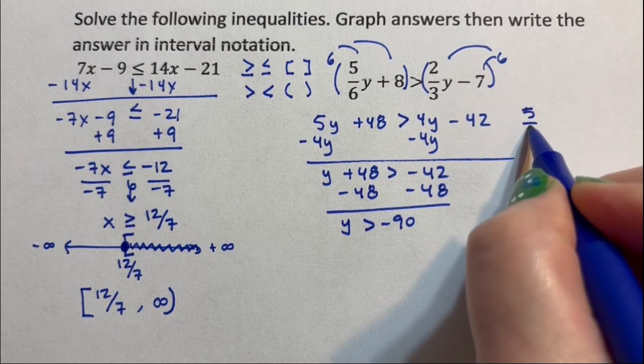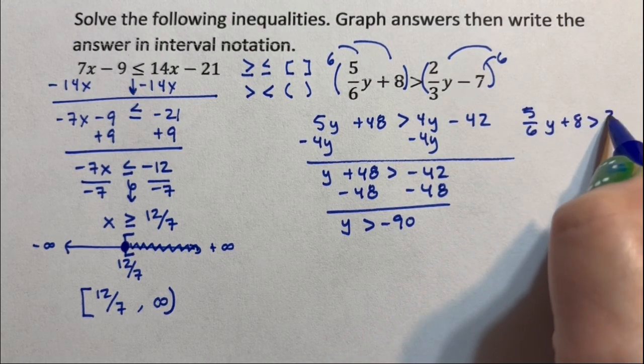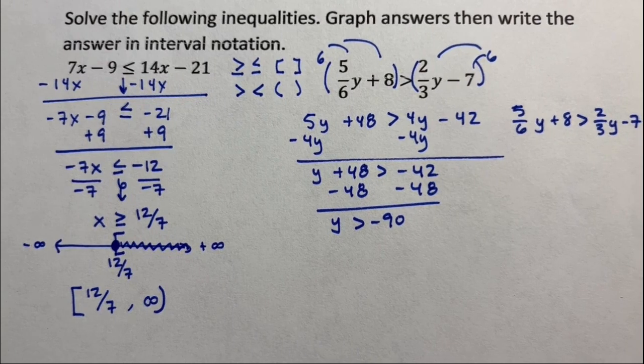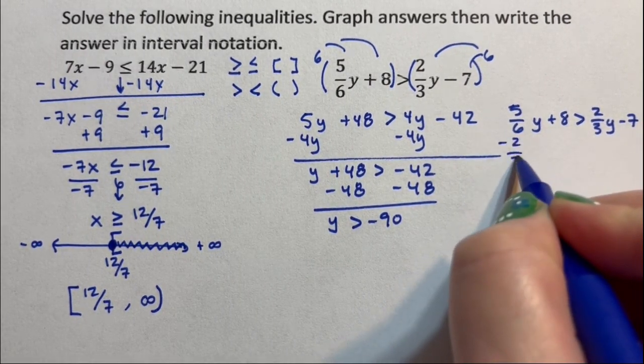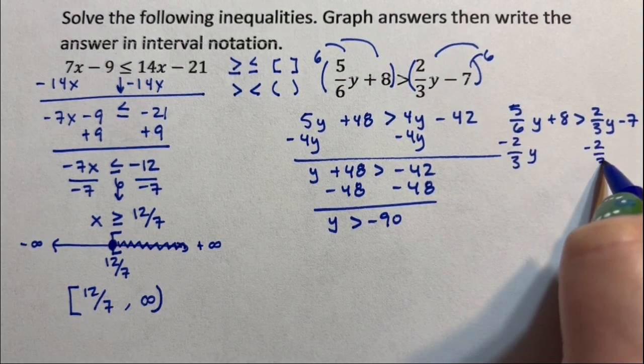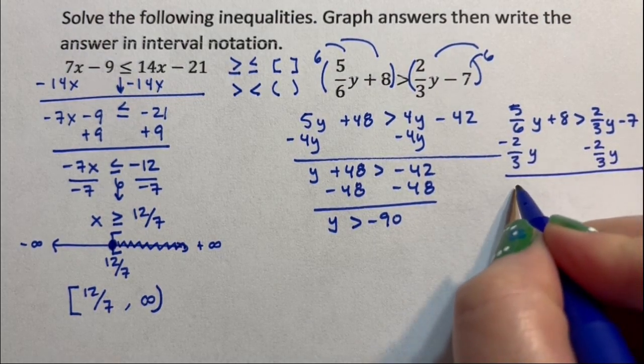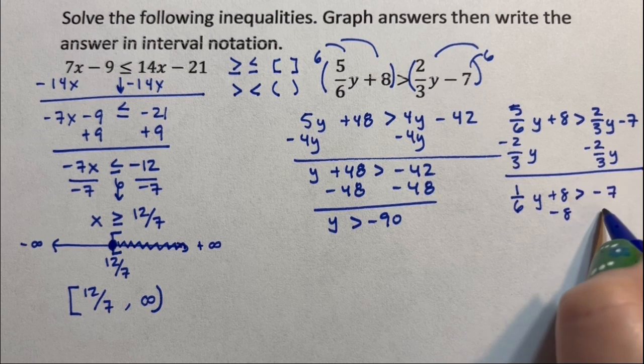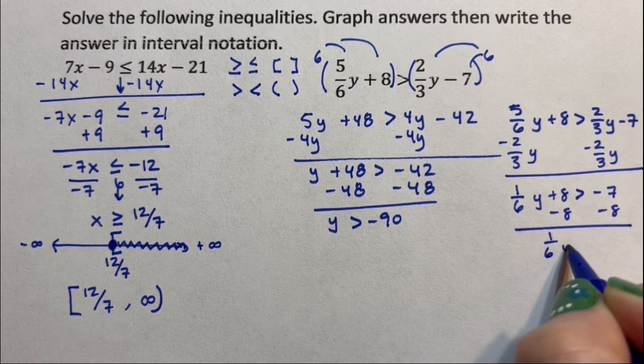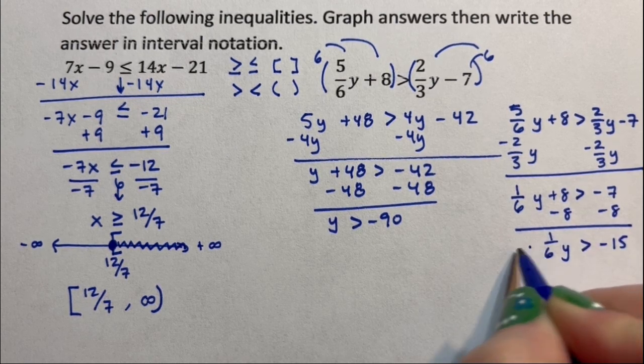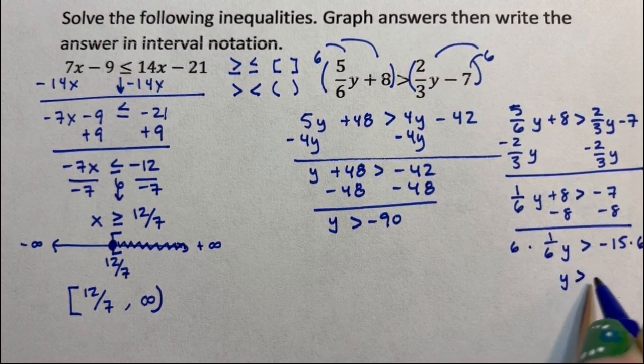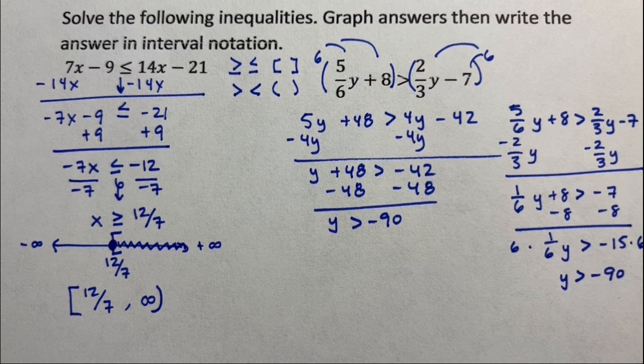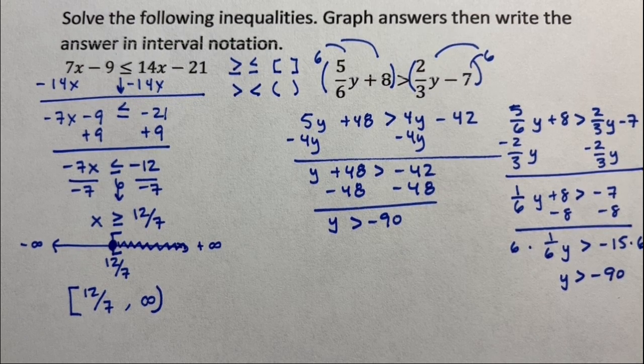The other way to do this, 5 sixths y plus eight is greater than two thirds y minus seven. I know a lot of students because I have students who do this all the time. They just want to subtract two thirds y. If you have a calculator, you're like, why can't I just root forth the cis, get one sixth y plus eight is greater than negative seven. Subtract that eight over, get one sixth y is greater than negative 15. Multiply both sides by six to get y is greater than negative 90. Why can't I just do that? And the answer is, I don't know, why not? Do what you want. You do you. Make sure you know your methodology and master it.